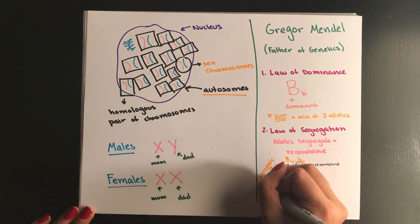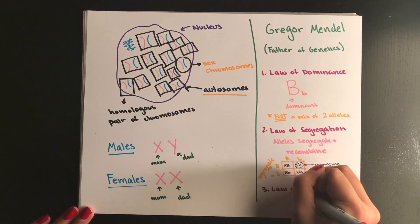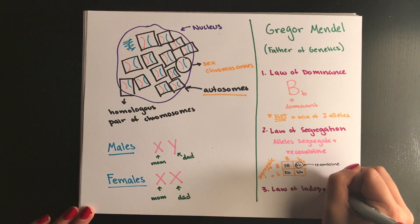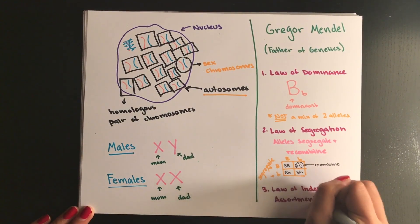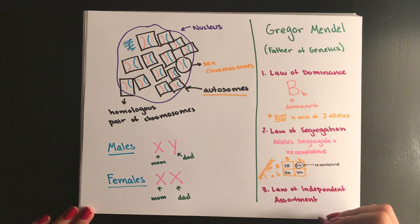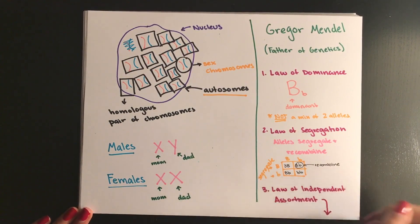Lastly is the law of independent assortment which states that two traits segregate randomly and that the four alleles can combine to give us four different gametes. So essentially what this means is that your two traits when you make your Punnett square segregate randomly.